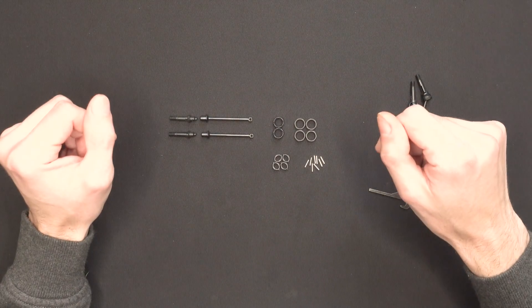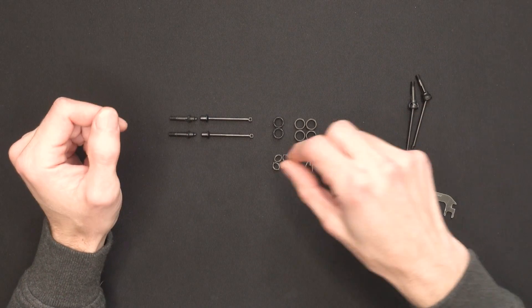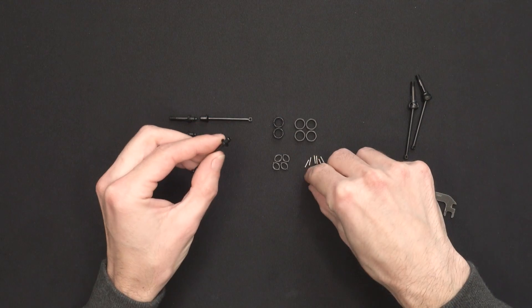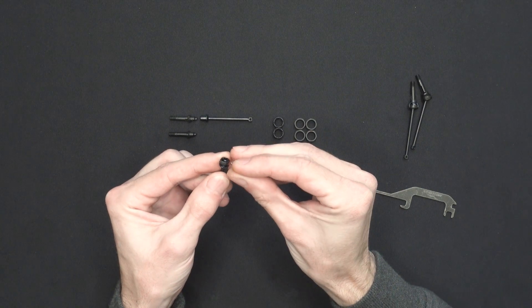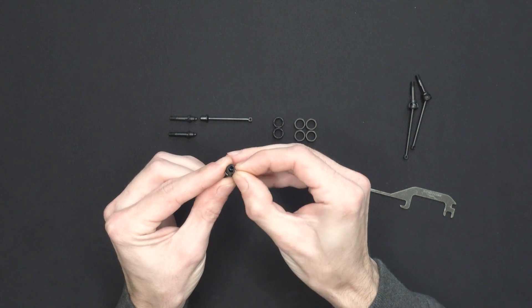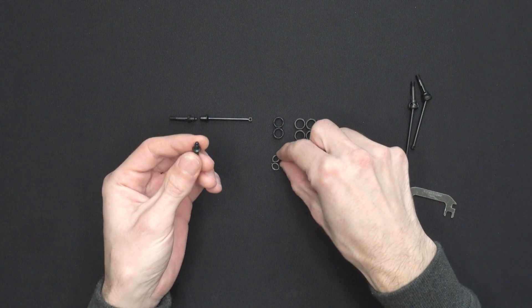Moving on, let's do the fronts. Similar process initially, grab the dog bone, joint cross and the pin, put them together, same process with the axle.